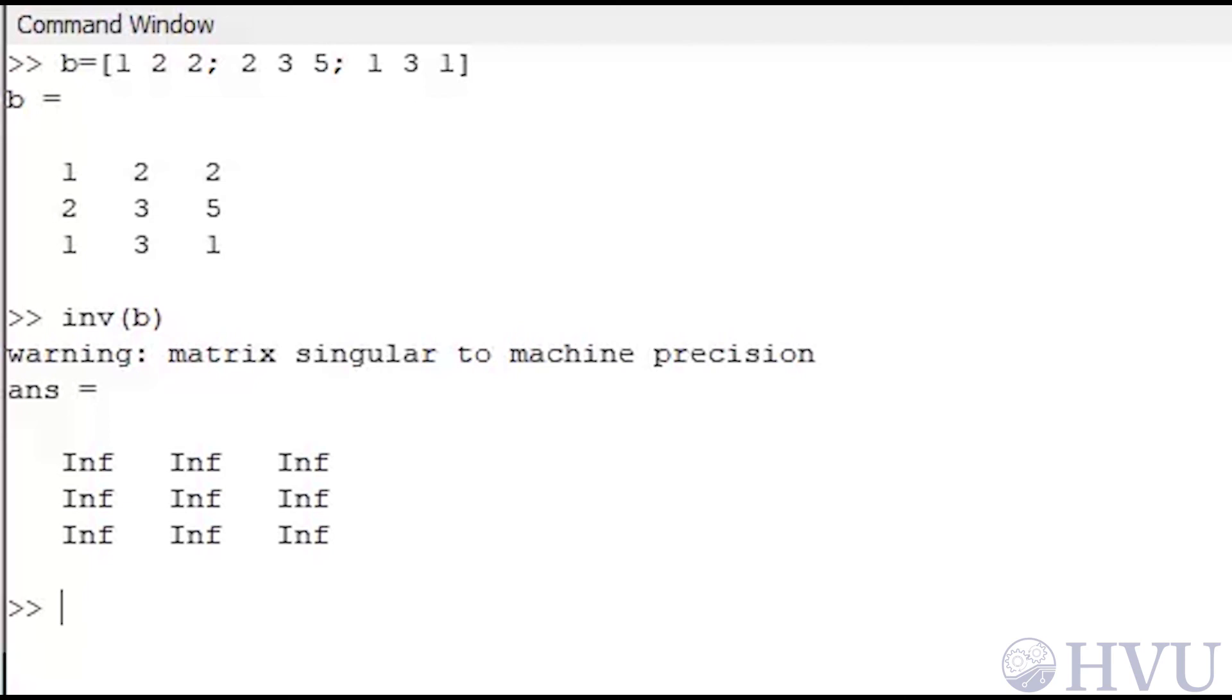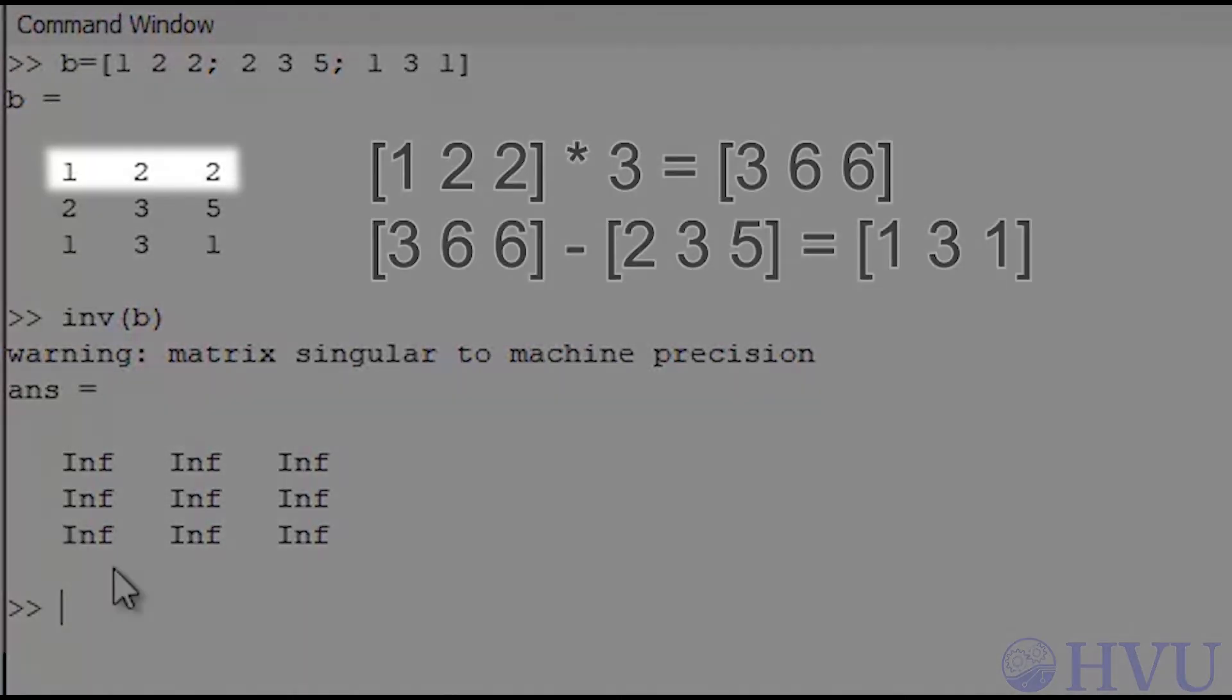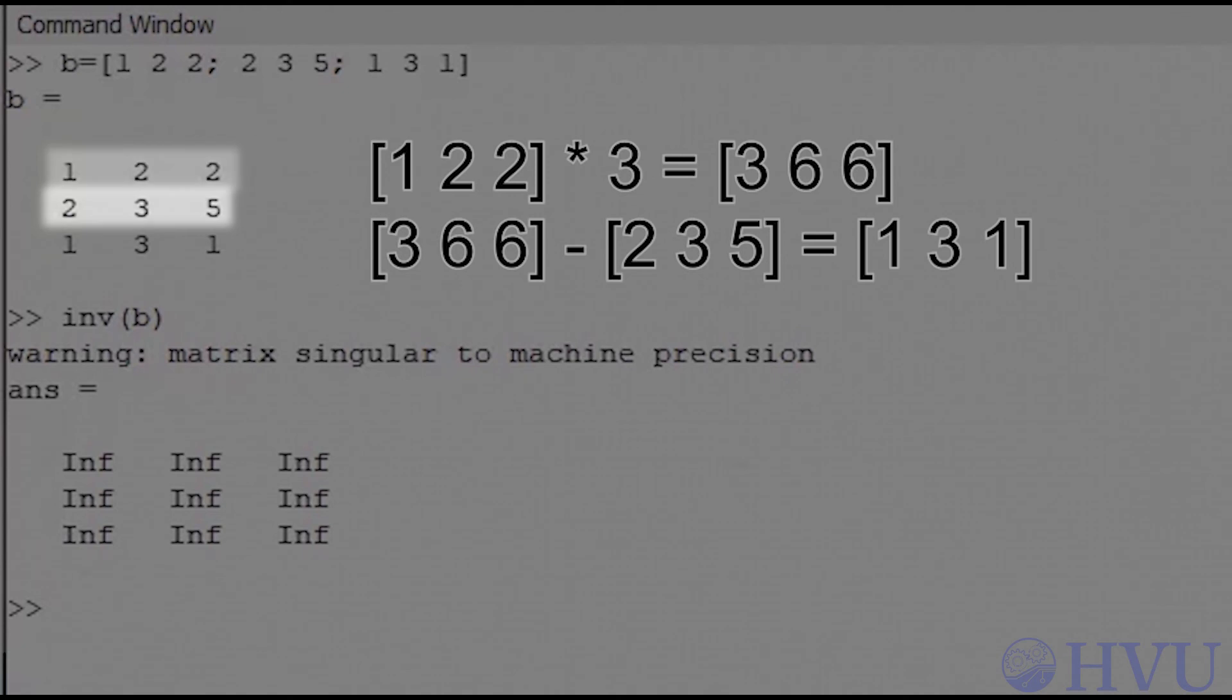The matrix B is singular because not all the rows in the matrix are independent. I can get the elements in the third row by multiplying the first row by 3 and then subtracting the second row from that result.